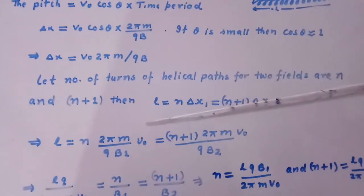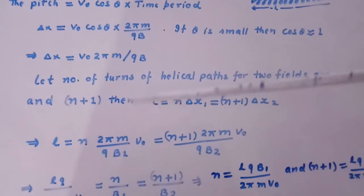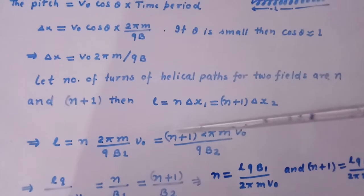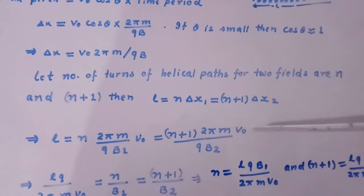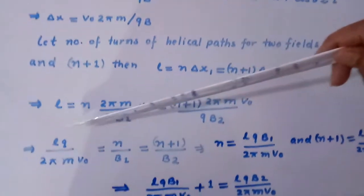Or L equal to N times, in place of delta X1 we put the value V0 times 2 pi M divided by QB1, equal to N plus 1 times 2 pi M V0 divided by QB2.